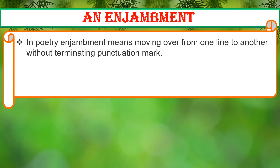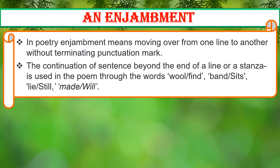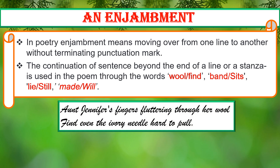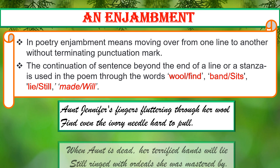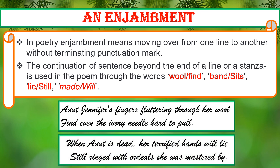Enjambment: In poetry, enjambment means moving over from one line to another without a terminating punctuation mark. The continuation of a sentence beyond the end of a line, stanza or couplet is used in the poem. For example: 'Aunt Jennifer's fingers fluttering through her wool, find even the ivory needle hard to pull.' And: 'When aunt is dead, her terrified hands will lie, still ringed with ordeals she was mastered by.' The meaning runs over from one poetic line to the next without terminal punctuation.